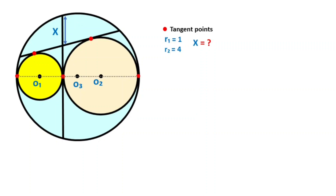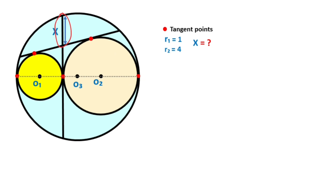Hello everyone. In this video we have three circles. O1 is the center of the smallest circle, O2 is the center of the middle circle, and O3 is the center of the biggest circle. The red points are tangent points and x is x.